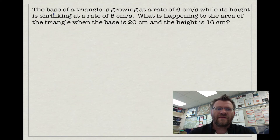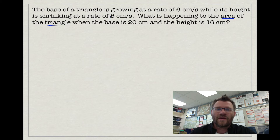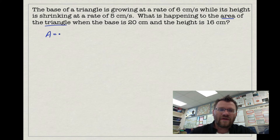Here's another example. The base of a triangle is growing at a rate of 6 centimetres per second, while its height is shrinking at a rate of 5 centimetres per second. What is happening to the area of the triangle when the base is 20 centimetres and the height is 16 centimetres? Since the base is growing and the height is shrinking, the area must be changing. The area of a triangle is one-half base times height.